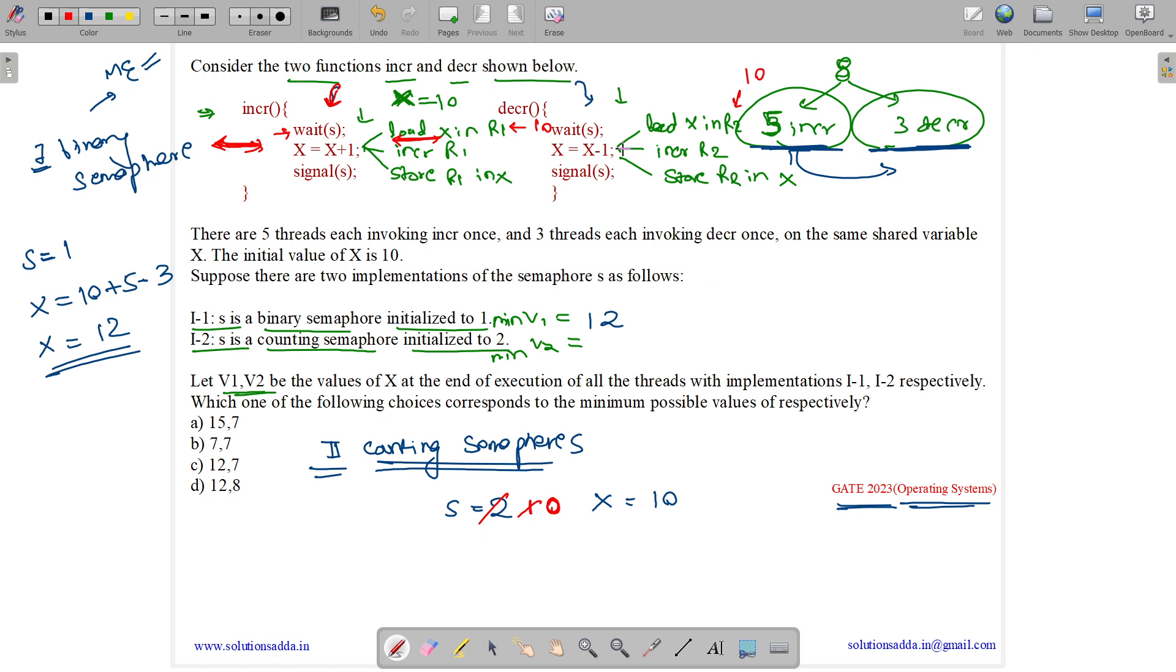So either thread 1 will execute increment or thread 2 will execute decrement. Suppose thread 1 executes the increment. So it increments R1 to 11 and stores R1 in X. So the value of X is 11. Now suppose one increment is done, 4 increments are remaining. Let us suppose we do all the 4 increments. So 11 is incremented by 4, the value is 11 plus 4 is 15. So all the increments are done.